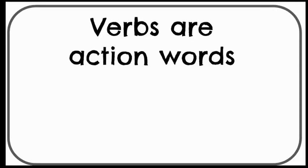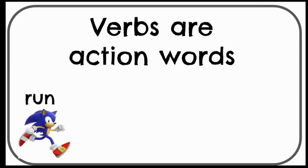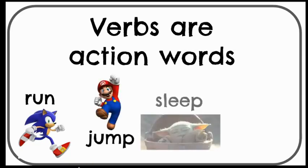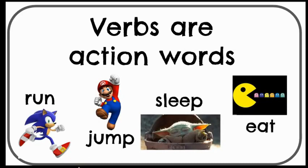Let's review. We know that verbs are action words — they usually tell us what the noun is doing when we read a sentence. Here are examples of verbs: run, jump, sleep, and eat. The nouns are the ones in the picture and it tells us what they are doing.